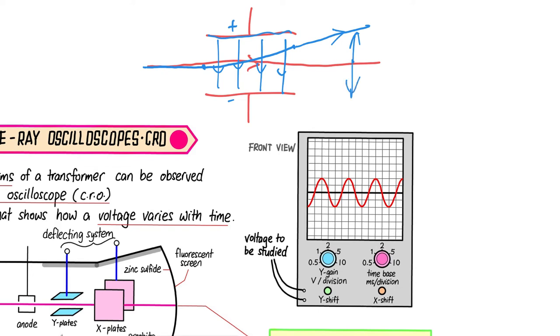Likewise, it can be deflected downwards if the bottom plate is made positive. If you want the deflection to be greater with the same source, that's where the Y gain comes in.